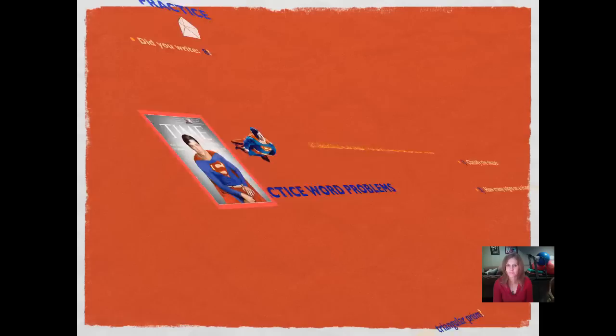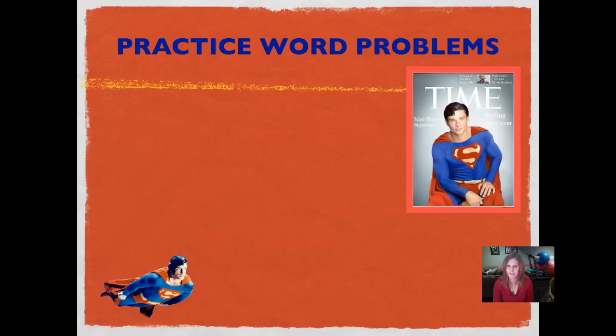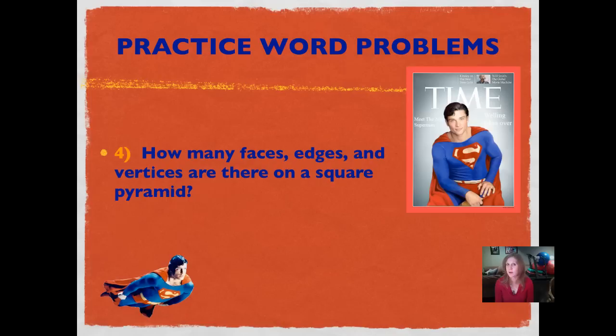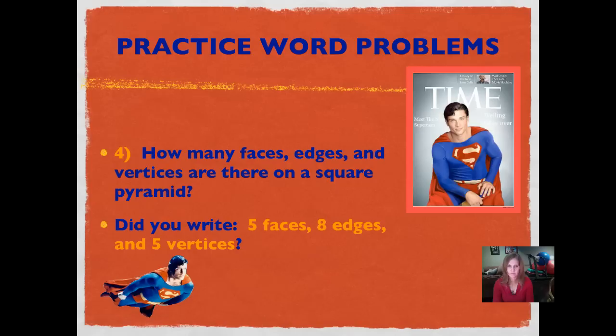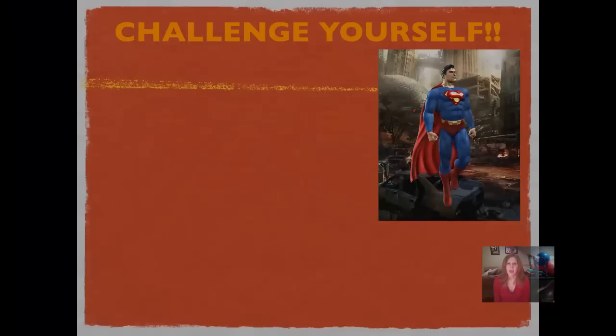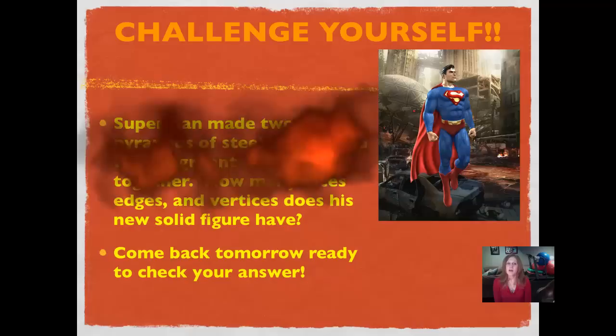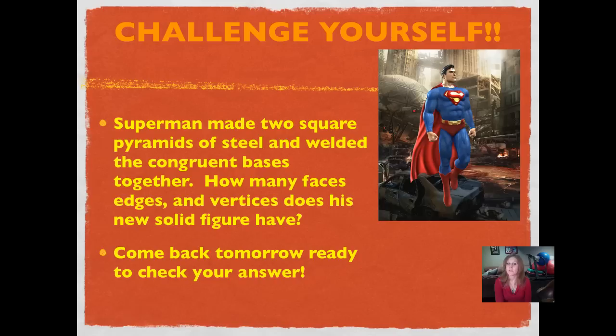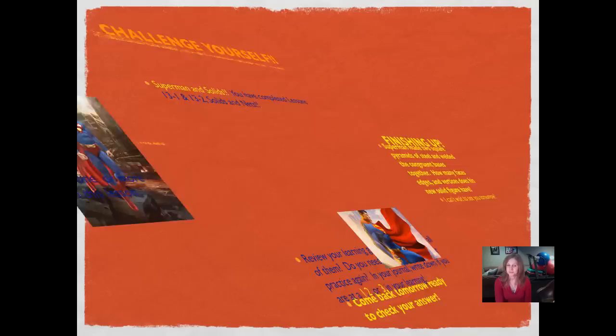Practice word problems: how many faces, edges, and vertices are there on a square pyramid? The answer is five faces, eight edges, and five vertices. Challenge: Superman made two square pyramids of steel and welded the congruent bases together — how many faces, edges, and vertices does his new solid figure have? Come back tomorrow to check your answer. Make sure you understand — you may need to watch this twice. I'm excited that you've completed lessons 13-1 and 13-2, solids and nets!